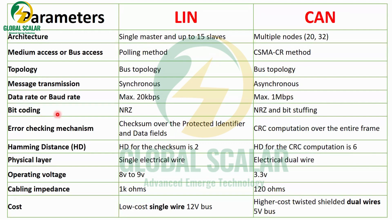LIN data rate is a maximum of approximately 20 kilobits per second; CAN supports up to 1 Mbps. For bit coding, LIN uses NRZ with bit stuffing when transmitting between sender and receiver. For error checking, LIN uses checksum — when a specific slave is selected, the checksum process validates the data. CAN uses CRC and only transfers data for valid messages.